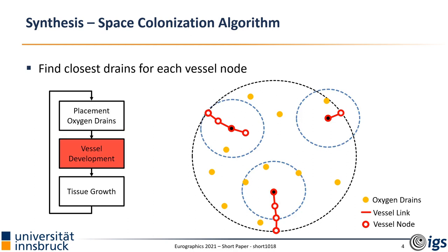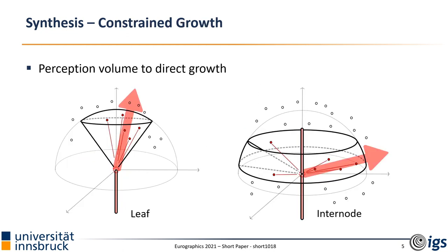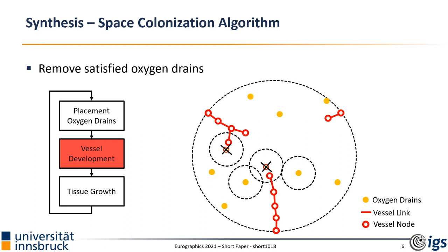Next, the blood vessels undergo a growth process in which they try to reach oxygen drains in their proximity. In this step we enforce the previously mentioned geometry constraints. One approach we use to guide vessel growth along valid directions is by restricting the area in which oxygen drains initiate blood vessel growth. For example, in the left image we guide the elongation of vessels inside a conical volume to avoid heavy bending. On the right, we restrict the development of a new branch to follow the direction according to the optimal bifurcation angles. When vessels reach satisfied oxygen drains — meaning a vessel got close enough — we remove them.